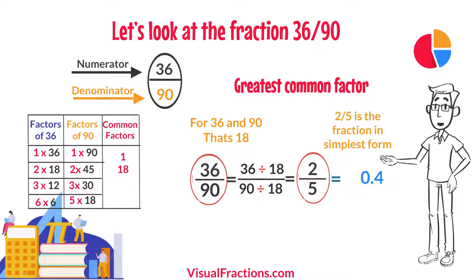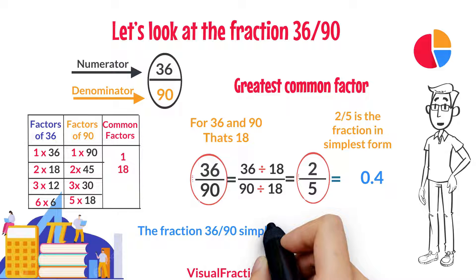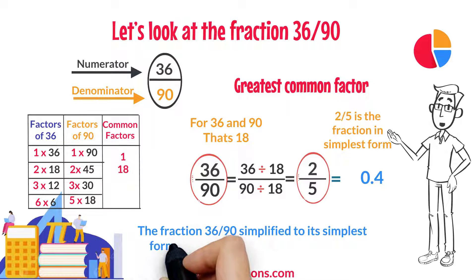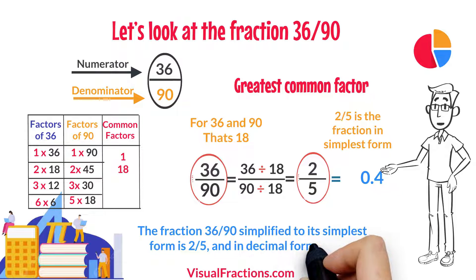So, there you have it. The fraction 36/90 simplified to its simplest form is 2/5, and in decimal form, it's 0.4.